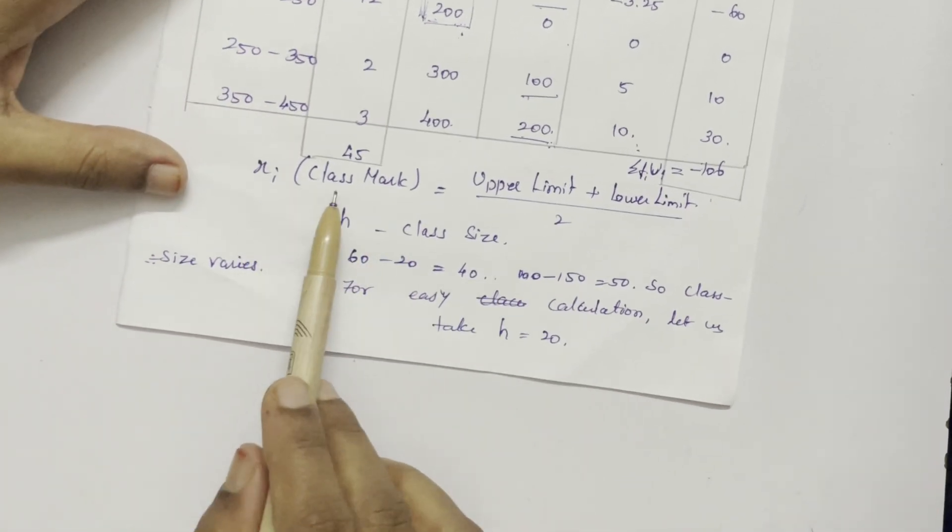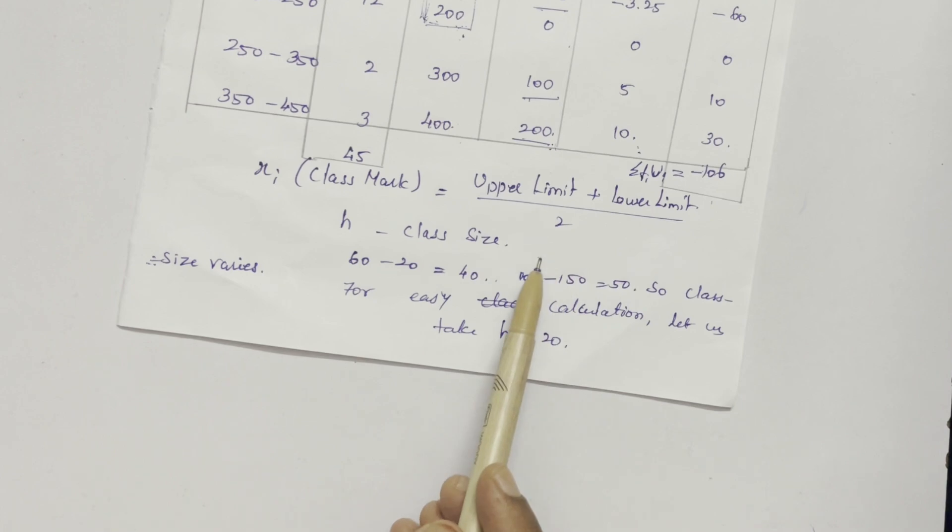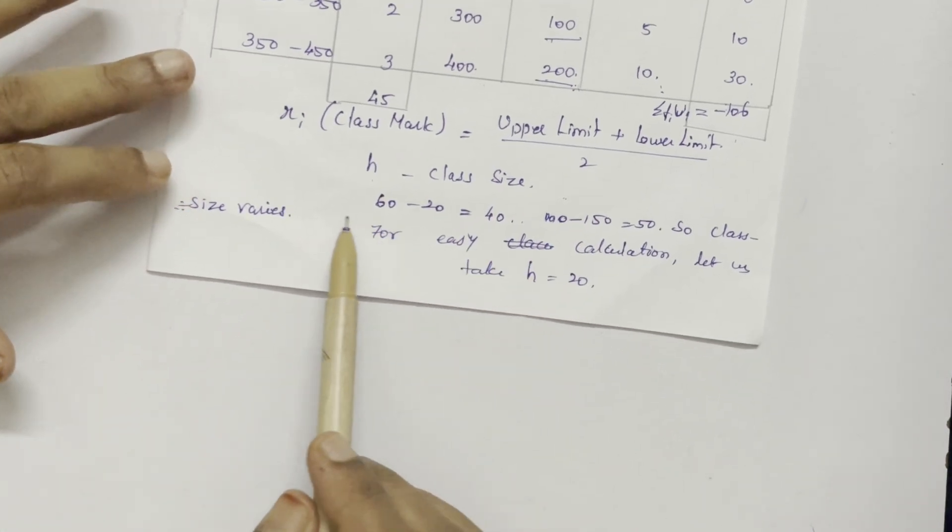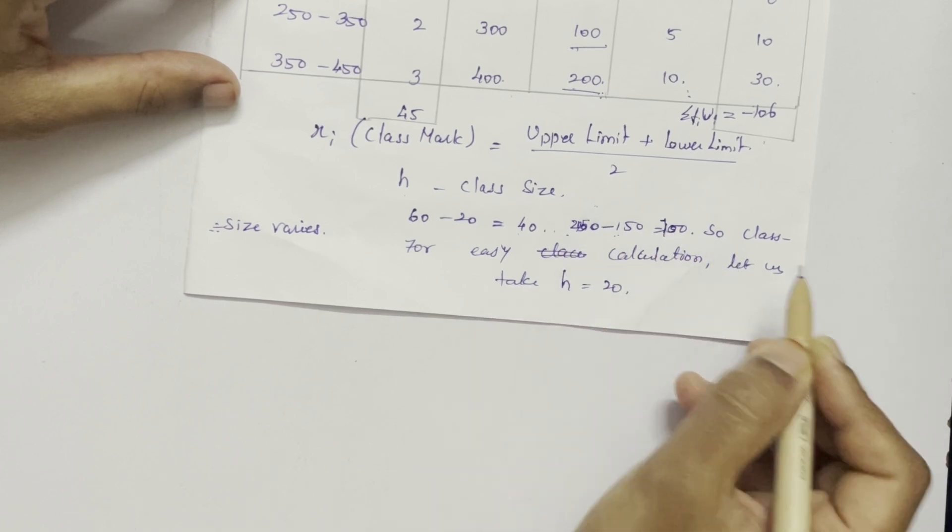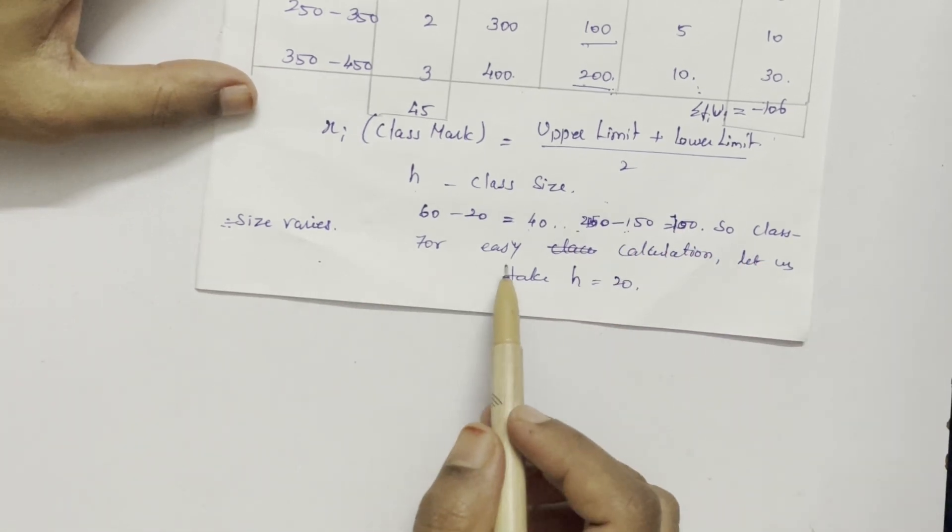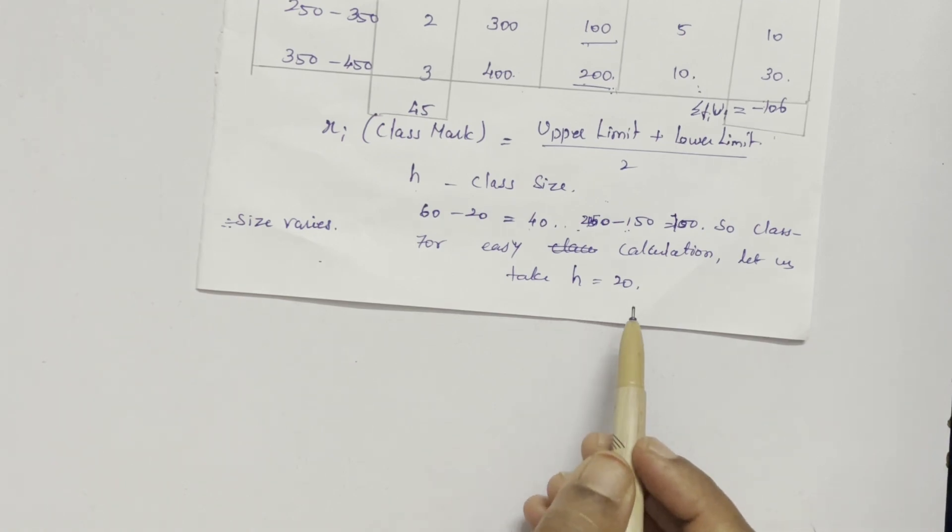See what I have written. XI is class mark, upper limit plus lower limit by 2. H is the class size. Here 60 minus 20 is 40. 250 minus 150 is 100. So the class size varies. So for easy calculation, let us take H is equal to 20.